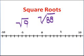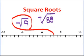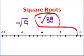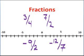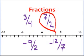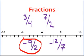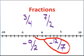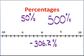Square roots fit on the number line. This is a perfect square root. The square root of 9 is exactly 3, but the square root of 88 is a little bit more than 9, and is there on the number line. Fractions fit on the number line. 30 quarters fits about there, 7 halves fits about there.